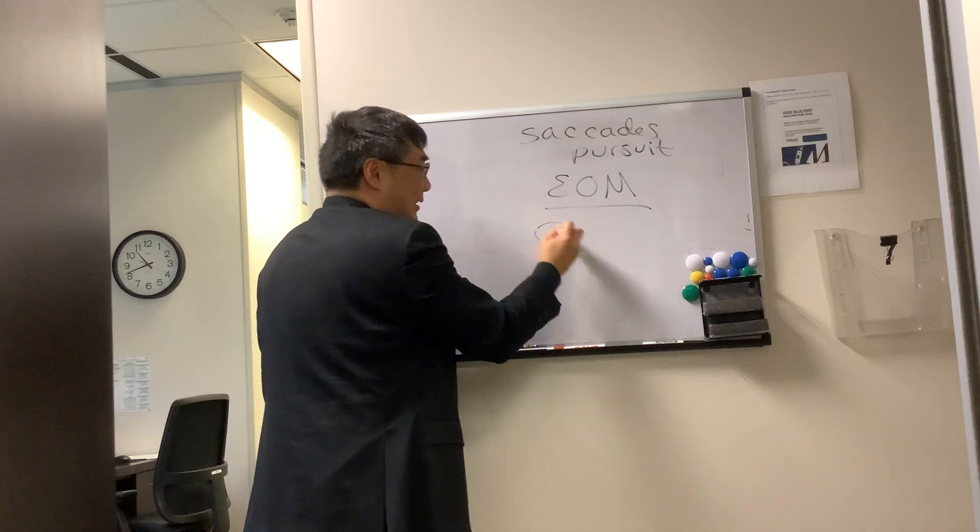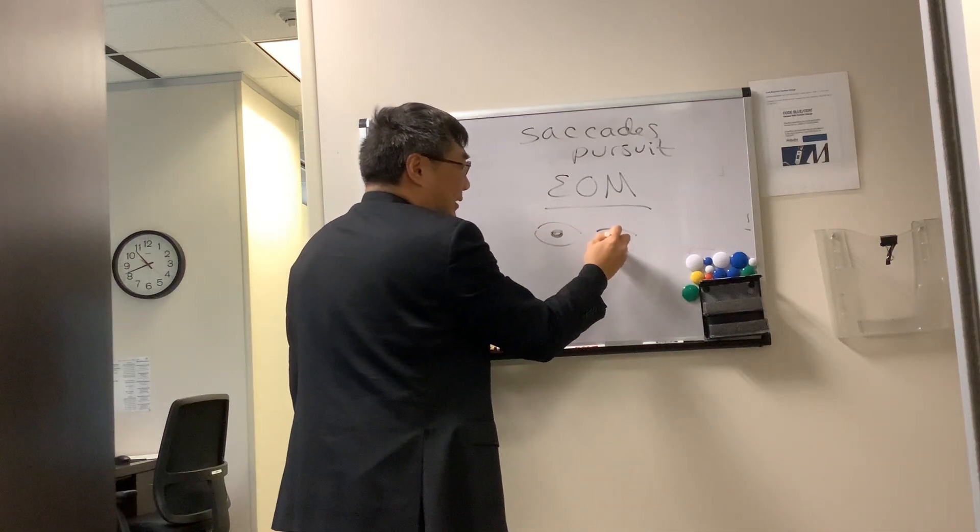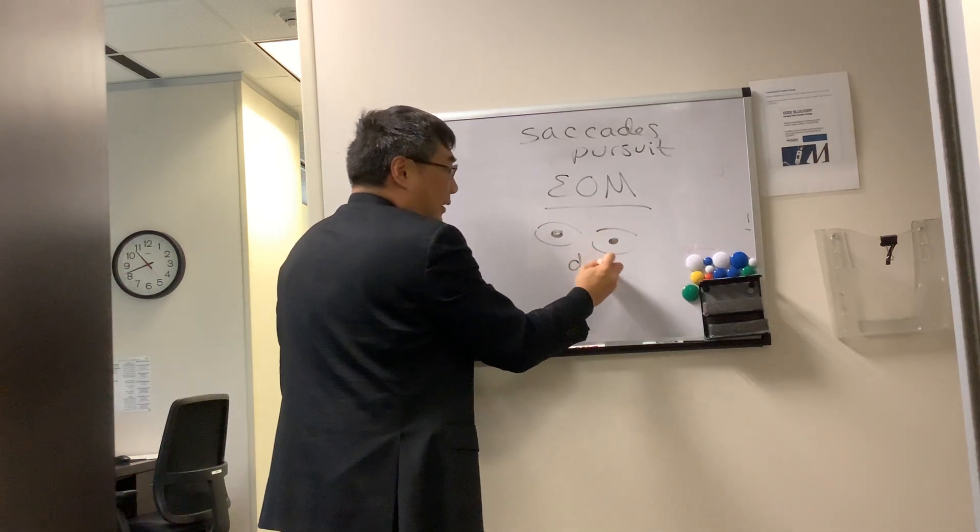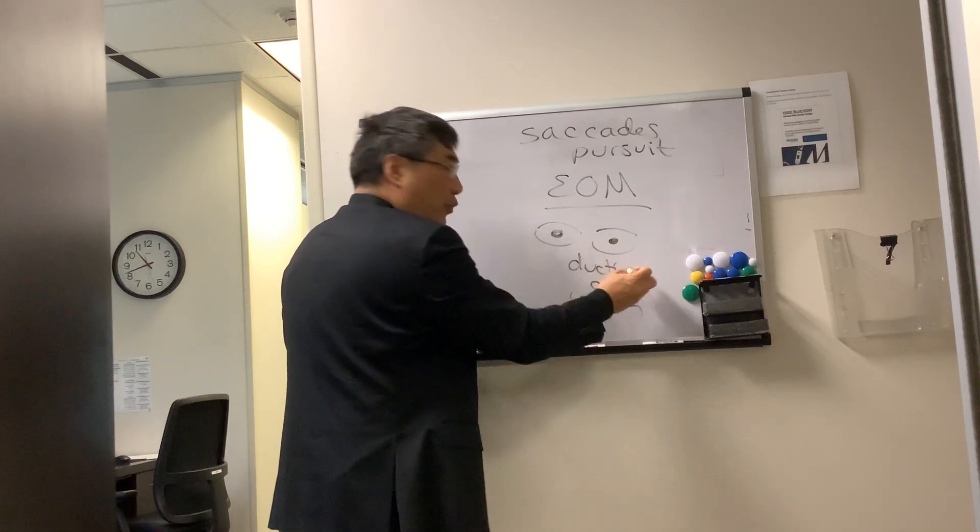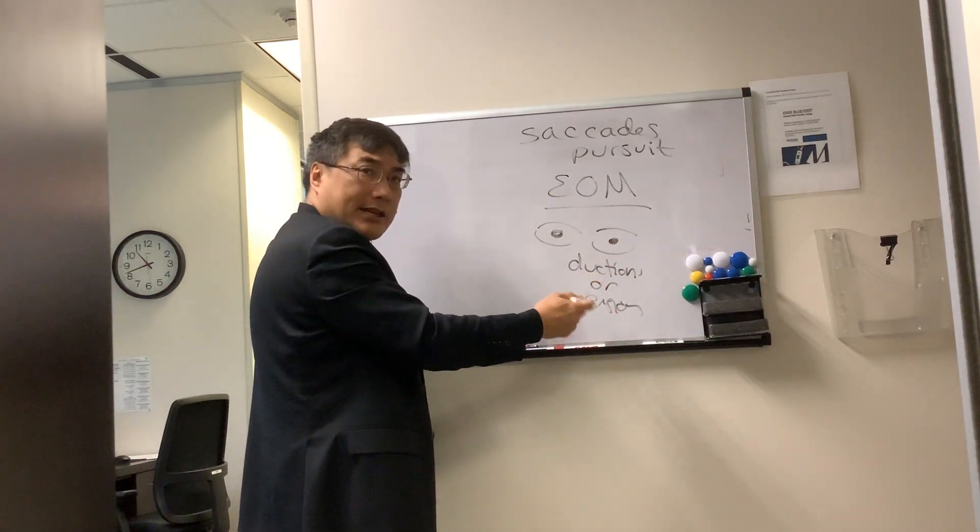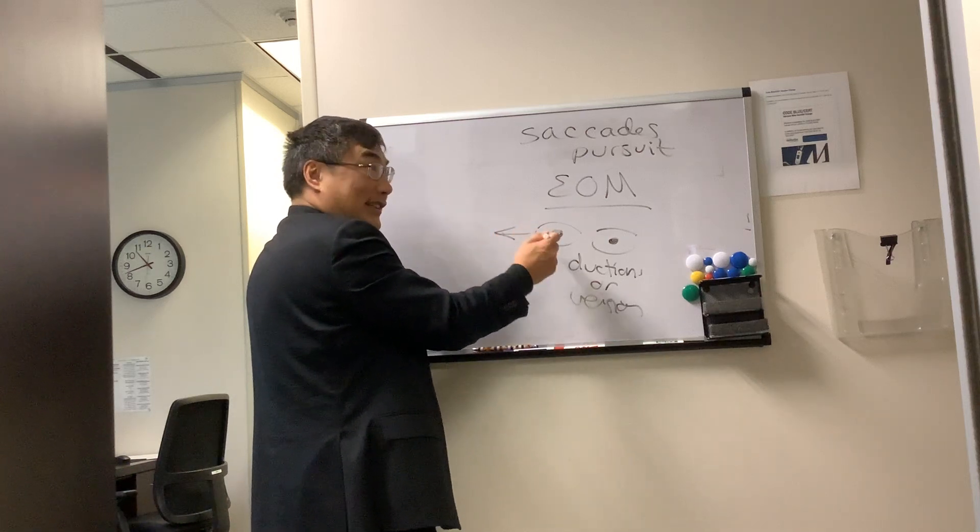So normally when we're testing the eye movements, we're really only testing the ductions or the versions. Ductions is when you're moving one eye only. Version is when you're moving them together. And so it usually looks like this.